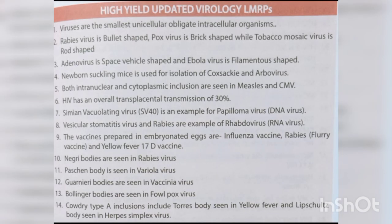Viruses are the smallest unicellular obligate intracellular organisms. Rabies virus is bullet-shaped; pox virus is brick-shaped; tobacco mosaic virus is rod-shaped; adenovirus is space-vehicle-shaped; Ebola virus is filamentous-shaped. Newborn suckling mice are used for isolation of Coxsackie and arboviruses. Both intranuclear and cytoplasmic inclusions are seen in measles and CMV. HIV has an overall transplacental transmission of 30%. Vaccines prepared in embryonated eggs include influenza vaccine, rabies, and yellow fever 17D vaccine.